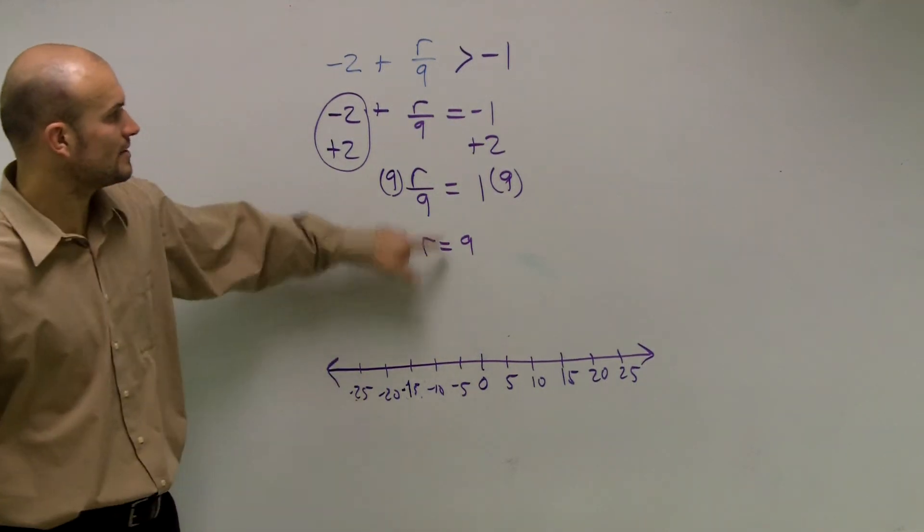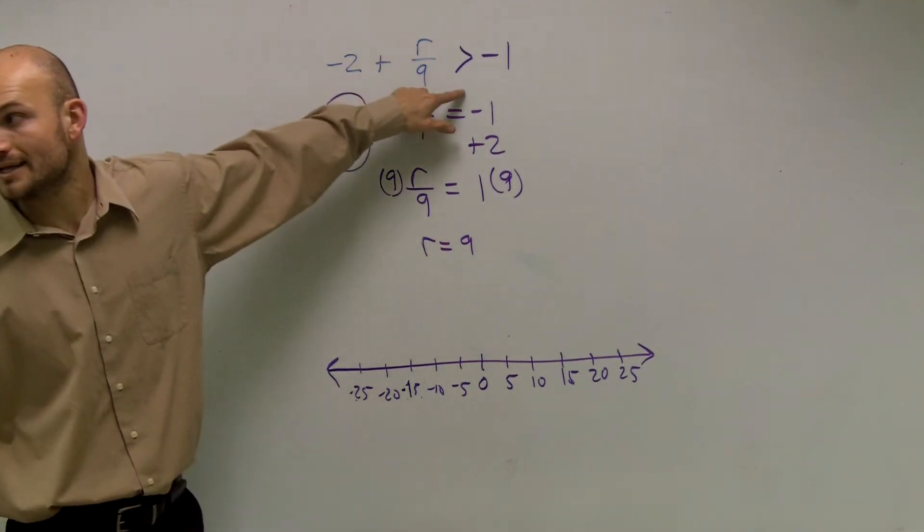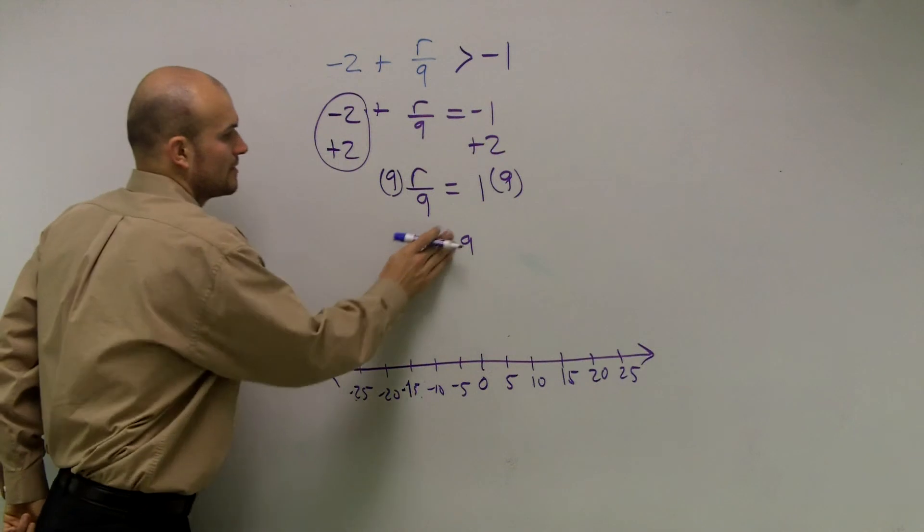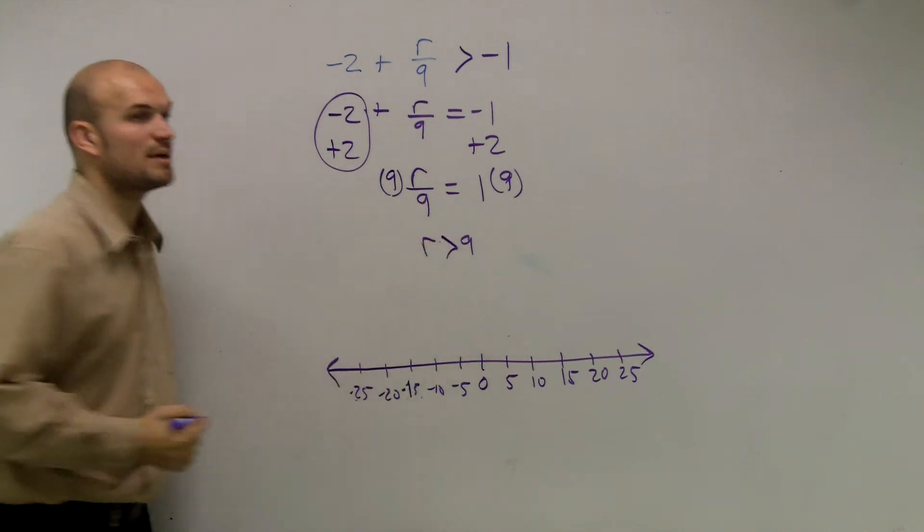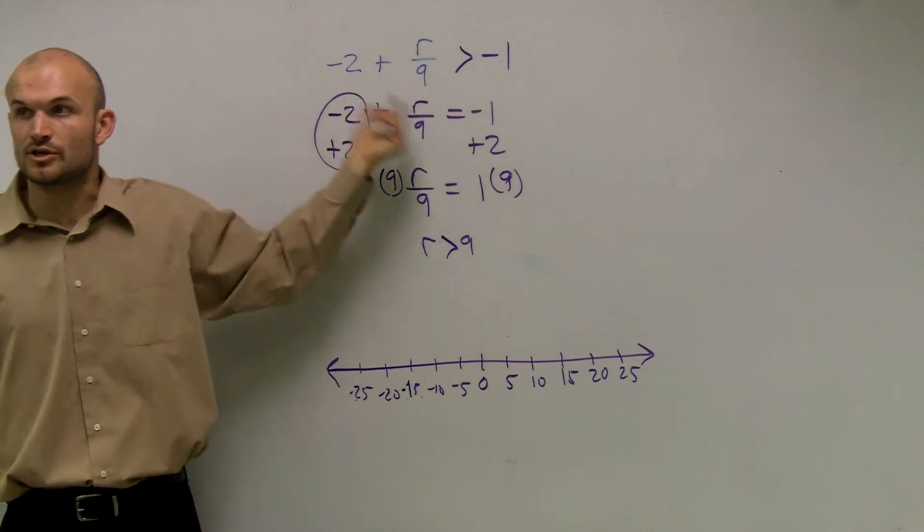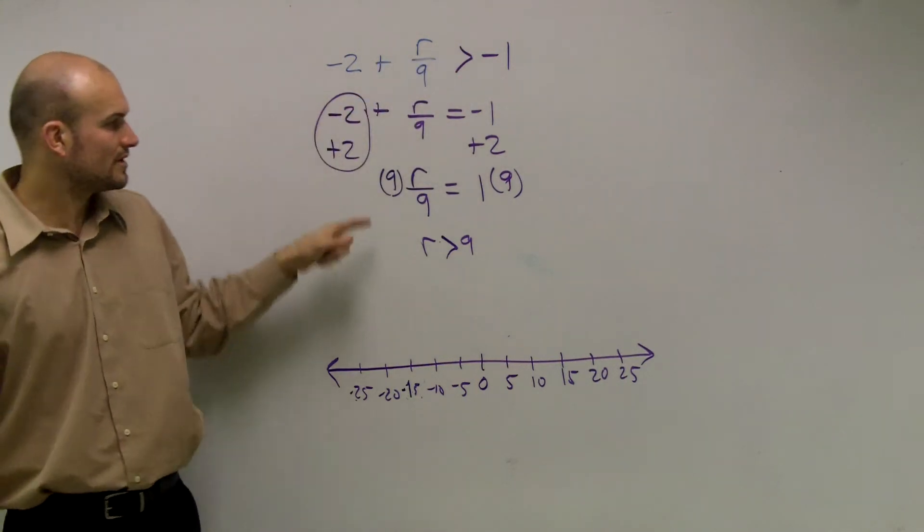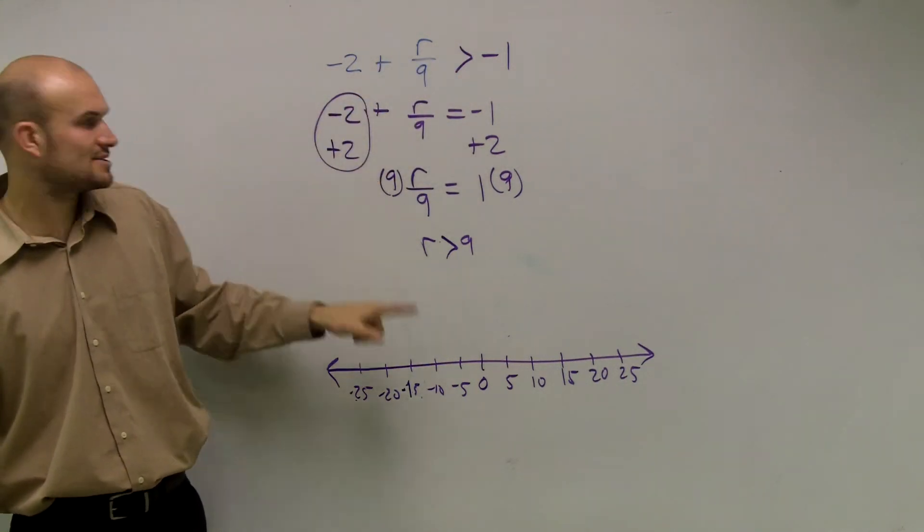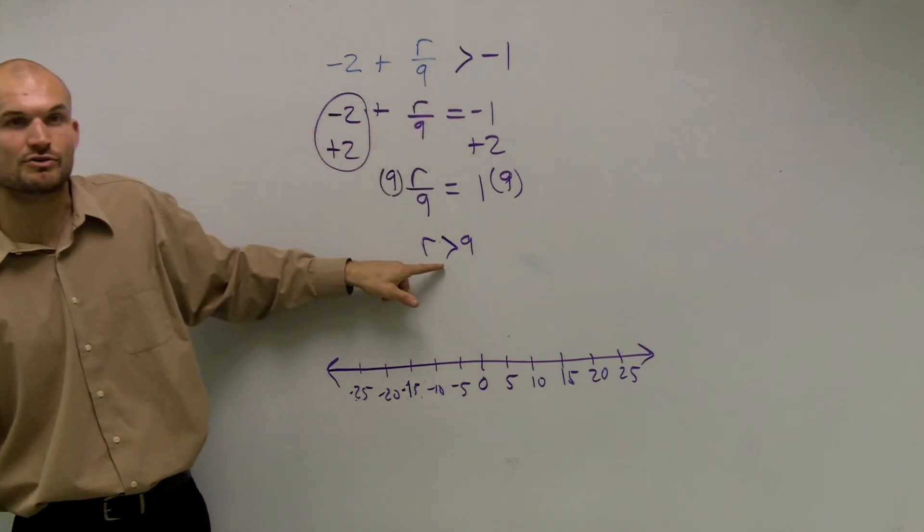All right, and then what I'm going to do is I'm going to plug back in my inequality symbol. Now, you've got to make sure, remember on my last example, I told you guys if you divided or multiplied by a negative number, you'd have to flip it, right?